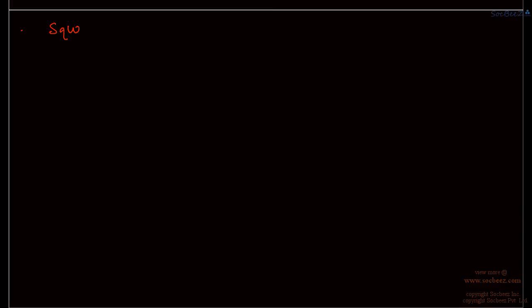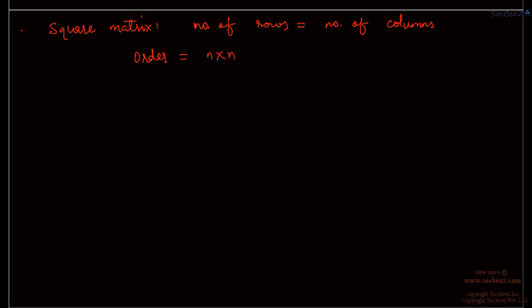There is something known as a square matrix. This is the most important and most commonly used type of matrix. A square matrix is one which has the same number of rows and columns. In general we had m rows and n columns, but here m is equal to n, and we usually write that as n. The order is n cross n, but we can just easily call it of order n.